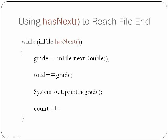Using has next to reach file end. To do this, we will use a while loop, and using the condition as endfile.hasNext. This means the while loop will not execute if there is no more data to be read from the file. Inside the while loop, we will read the data from the file, put it into grade, update total, print the grade to ensure that the while loop is executing correctly, and then add to the count.